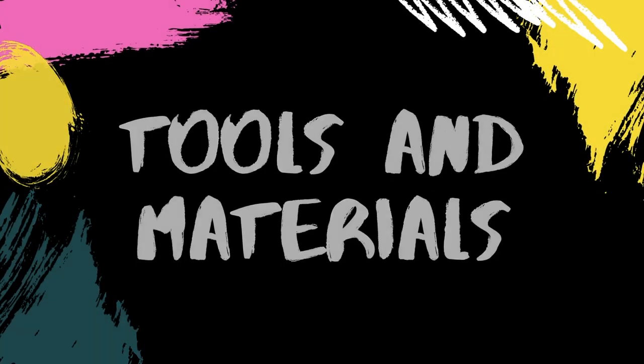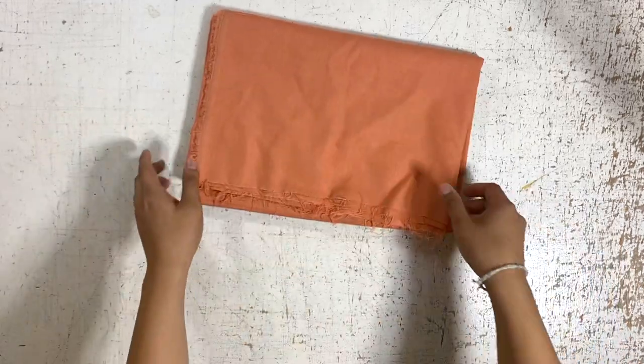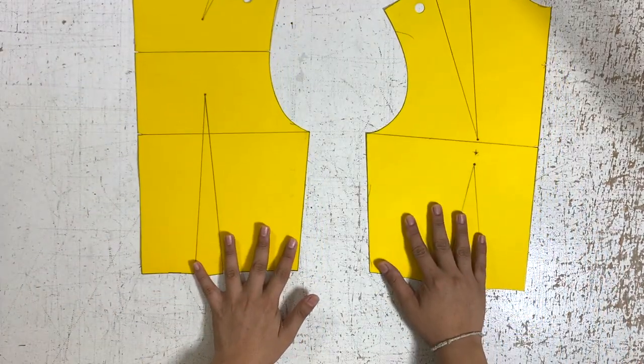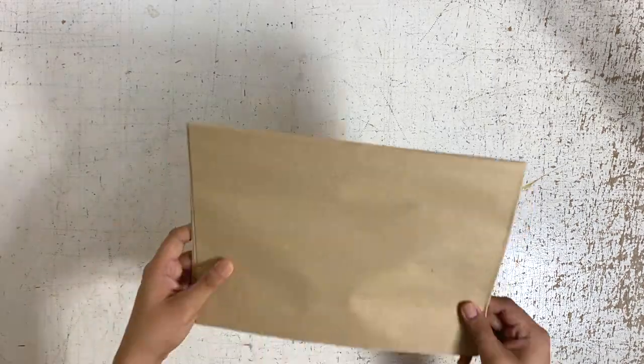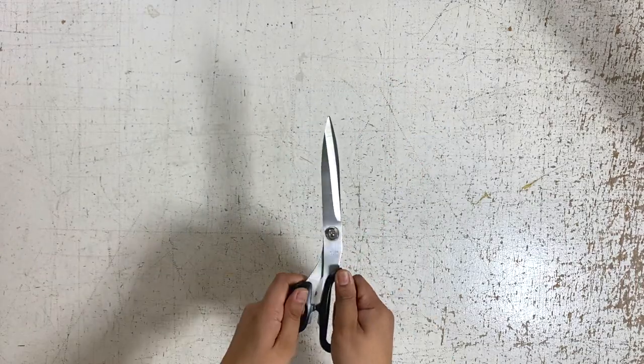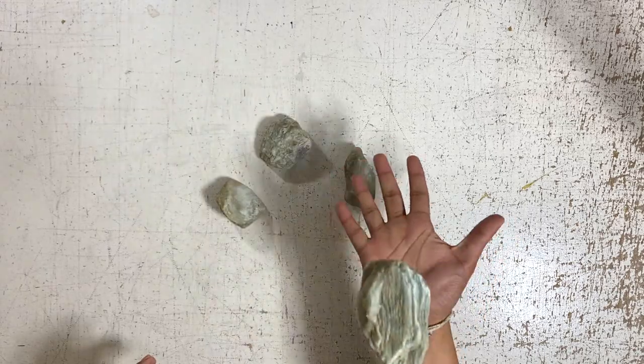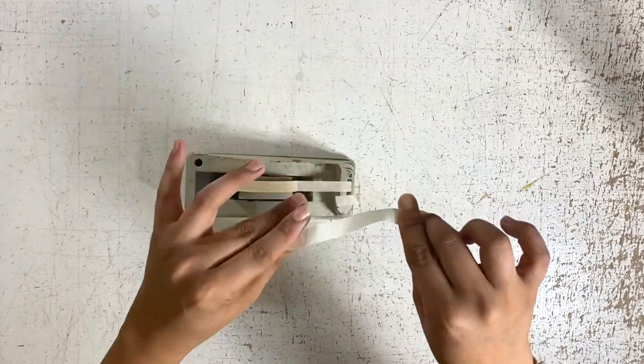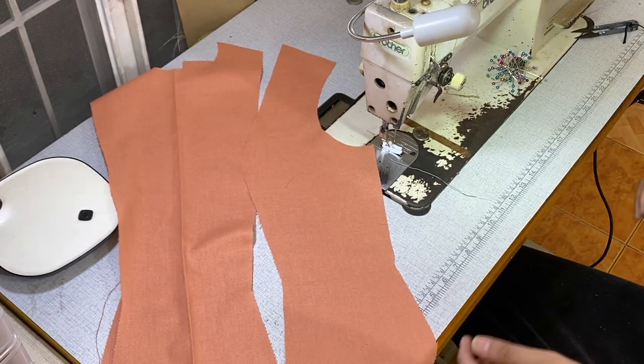Here are the tools and materials that I'll be using for this tutorial. Fabric of your choice, front and back bodice slopper, pencil, pattern papers, fashion rulers, fabric scissors, paper scissors, pattern weights - I use stones as my pattern weights - masking tape, measuring tape, and of course, your sewing machine.